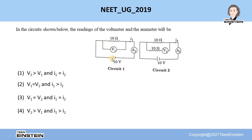Let us first analyze the circuit 1. So in the circuit 1, what you have is a resistor of 10 ohm resistance connected in series with a 10 volt battery.